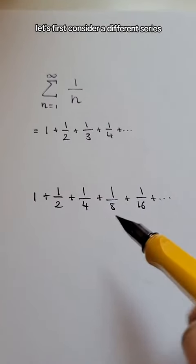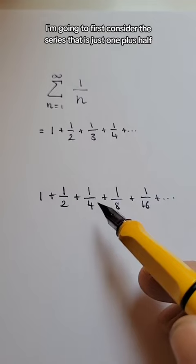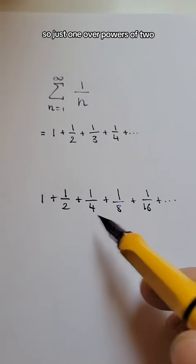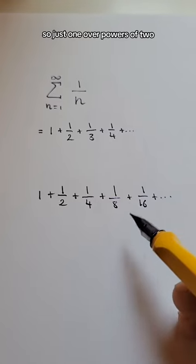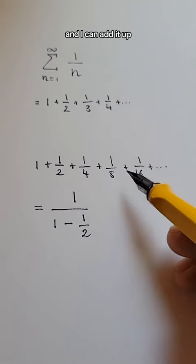This is the harmonic series, the sum of 1 plus 1/2 plus 1/3 plus 1/4, etc. So how is this related to prime numbers? Let's first consider a different series. I'm going to first consider the series that is just 1 plus 1/2 plus 1/8, so just 1 over powers of 2. What is this? This is, in fact, the geometric series, and I can add it up.